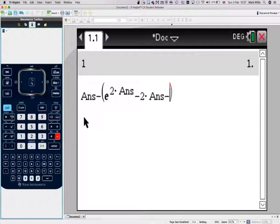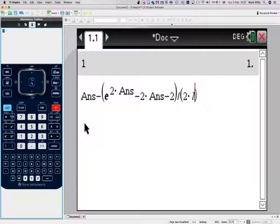And again put brackets in, 2 times e to the 2 times the answer minus 2. So that's the derivative.